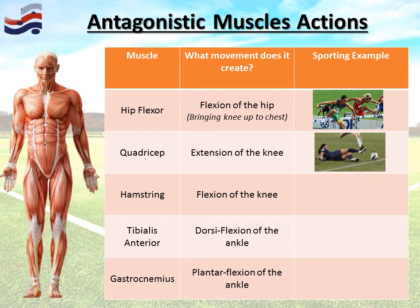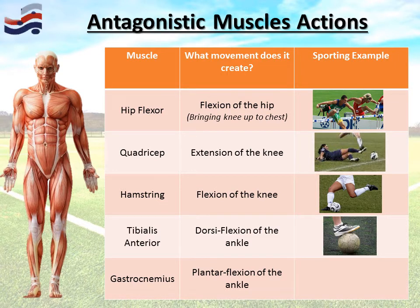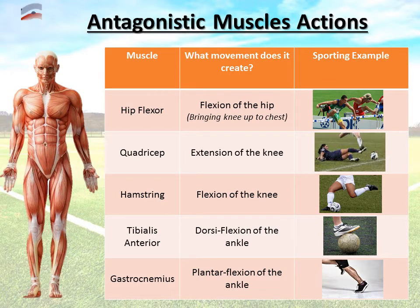The hamstring does the opposite to the quadricep — it bends the leg, which is flexion of the knee. The tibialis anterior, on the front of the lower leg, allows dorsiflexion — controlling a football is a good example. The gastrocnemius does the opposite, allowing plantar flexion of the ankle. When we push off in a running event, plantar flexion is created, and it's the gastrocnemius that allows that to happen.